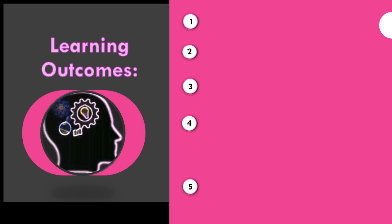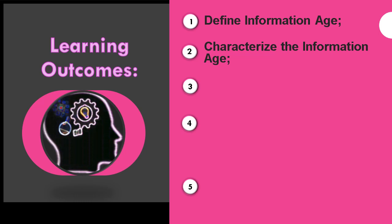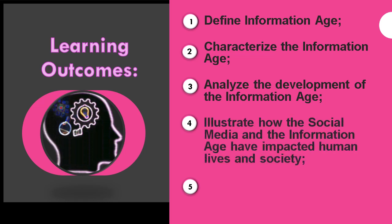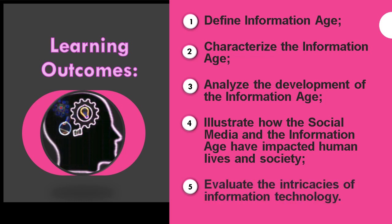These are the learning outcomes for today's discussion. At the end of the lesson, the student should be able to: 1. Define information age. 2. Characterize the information age. 3. Analyze the development of the information age. 4. Illustrate how social media and the information age have impacted human lives and society. 5. Evaluate the intricacies of information age.